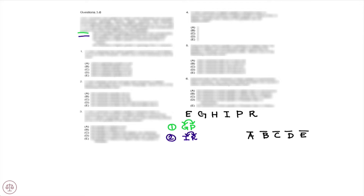Rule number three: he receives a higher grade in economics than in history. So here we have our classic sequencing rule — economics is ranked above history.